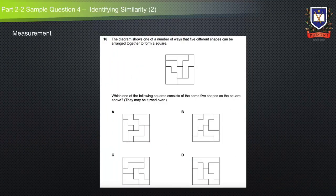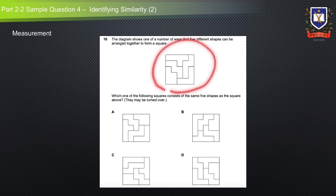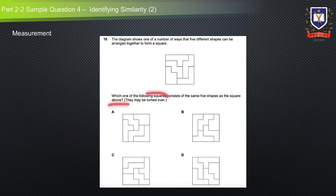Here is another measurement identifying similarity question from the OC example thinking skills exam. The diagram shows one of a number of ways that five different shapes can be arranged to form a square. Which of the following squares consists of the same five shapes as the square above? They may be turned over. This question falls in the identifying similarity category, as it requires students to identify similarities between the shapes in the given diagram and the shapes in the answer options.